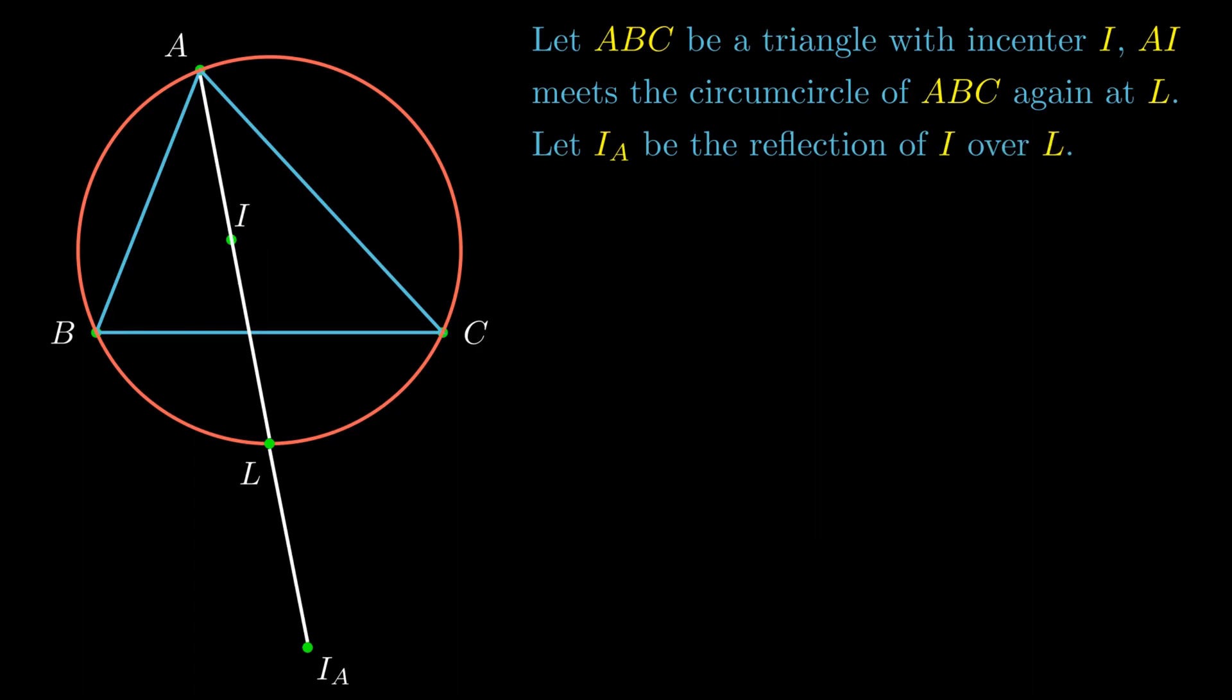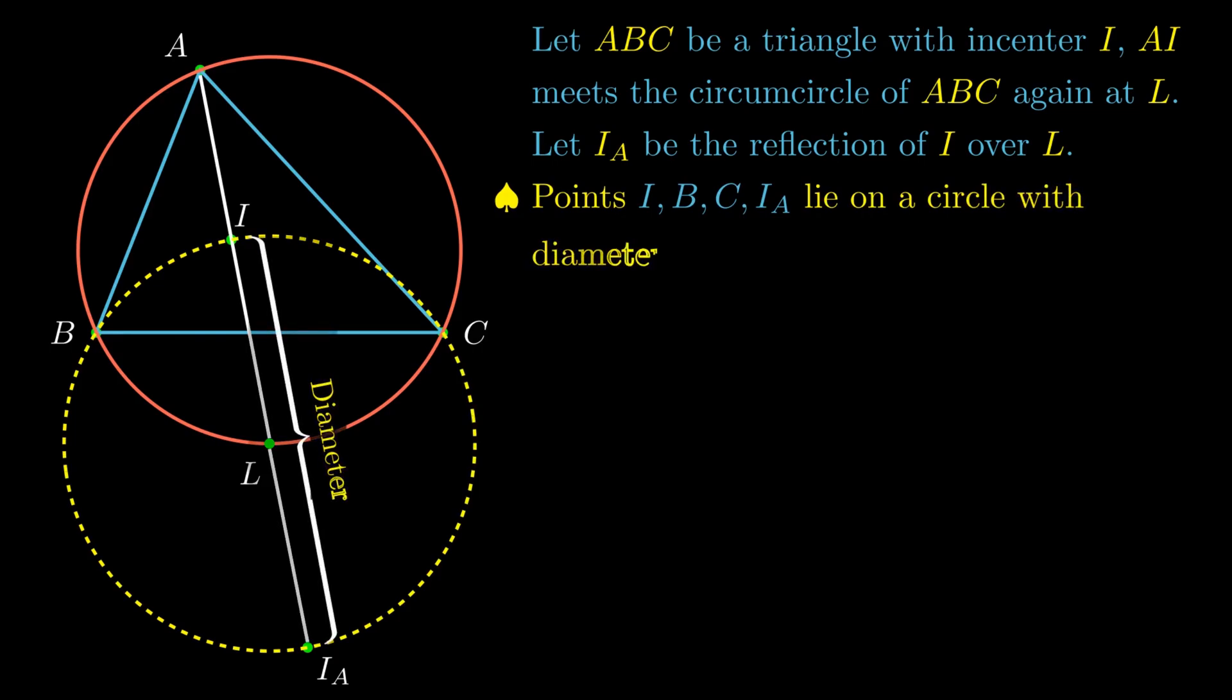Then we have two facts. The first fact is that the points I, B, C, and I sub A lie on a circle with diameter I and I sub A and center L. In particular, we have these four lengths are equal.